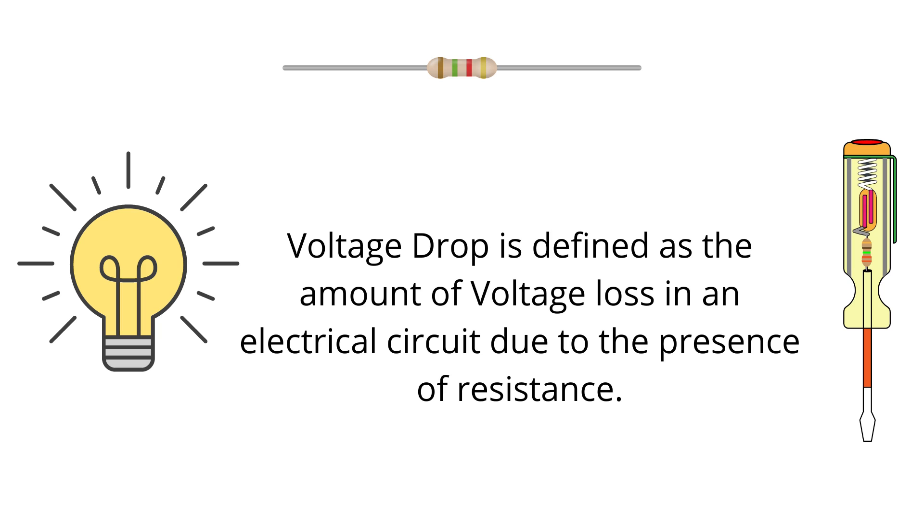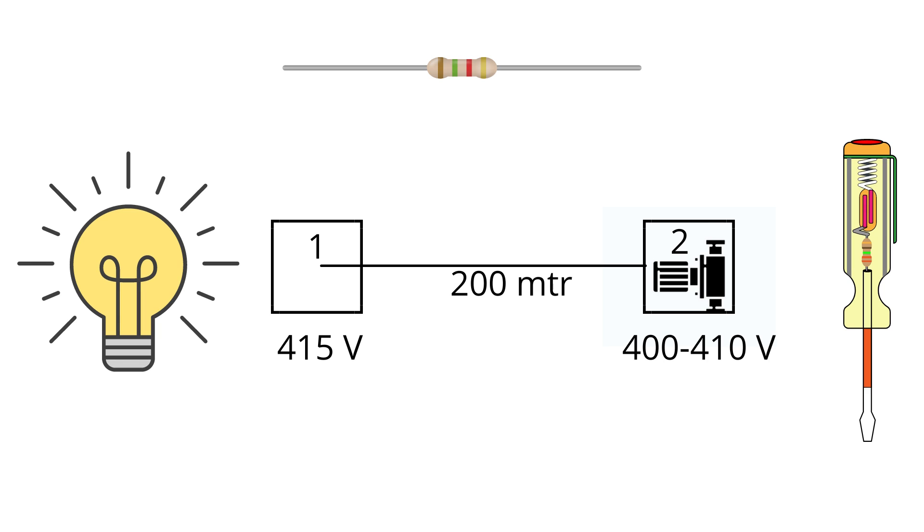Now let us understand this voltage drop by approaching it from a practical point of view. First, let us assume we have a point 1 where we supply voltage of 415 volts to a motor at point 2, which is 200 meters apart from each other. Upon inquiry we find that there is a drop in voltage on the motor end at point 2.